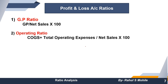Second is the operating ratio, which reveals what percentage of net sales the company's total expenses represent. Formula: COGS plus total operating expenses, divided by net sales. Total operating expenses includes three items: office and administration expenses, selling and distribution expenses, and financial costs. That is the operating ratio.